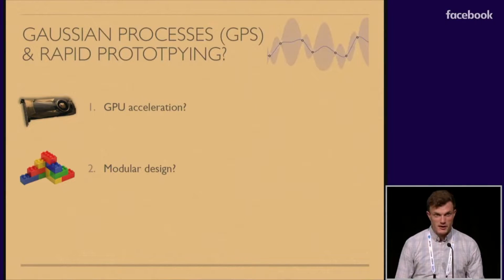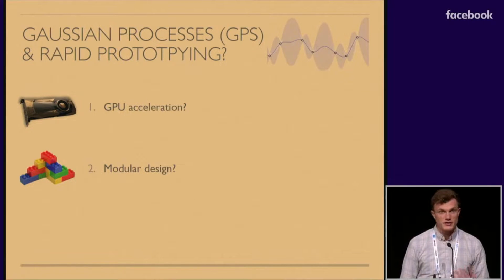So now let's talk about Gaussian processes. GPs are fantastic models. They have a number of really compelling properties that make them very powerful. Unfortunately, being able to rapidly prototype with them isn't necessarily one of them.